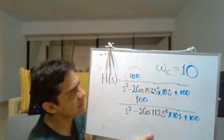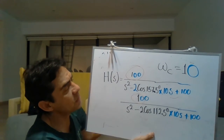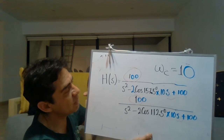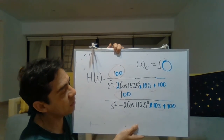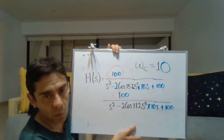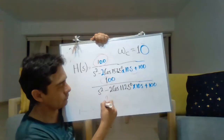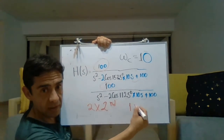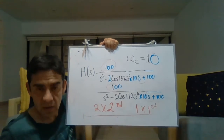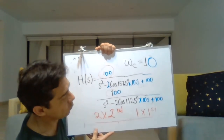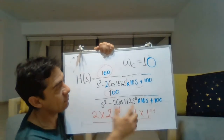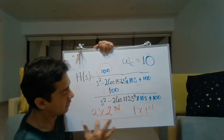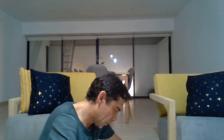If you are asked whether the implementation of this filter is done by using three stages — two second-order stages and one first-order stage — that is false. We don't need a first-order stage; we only need two second-order stages.